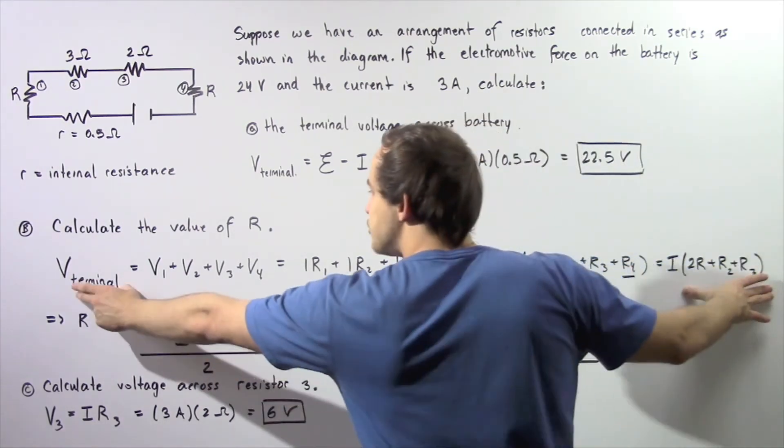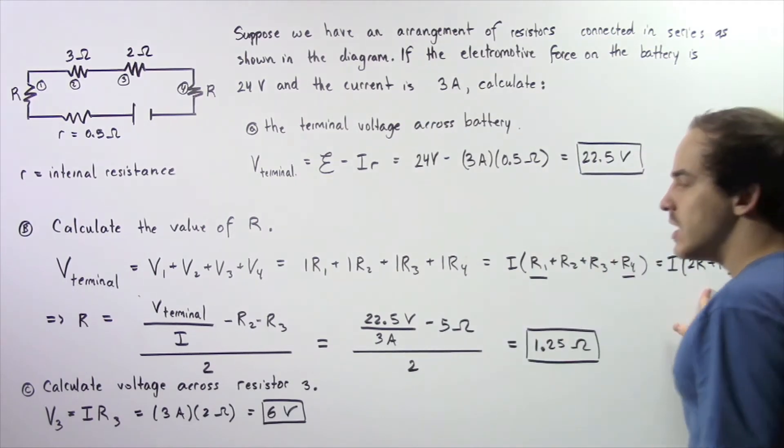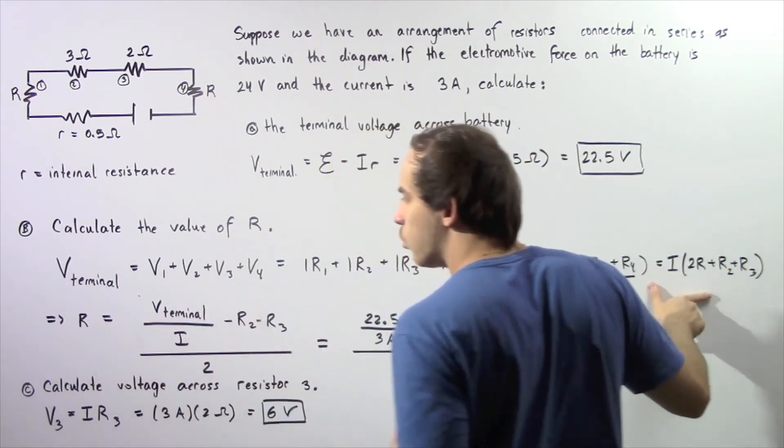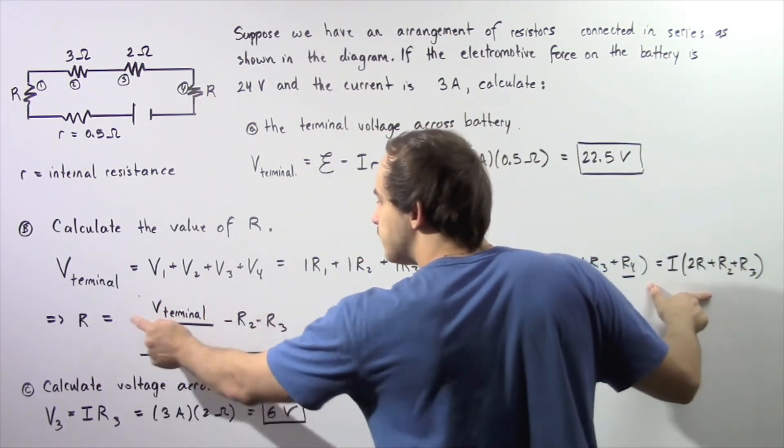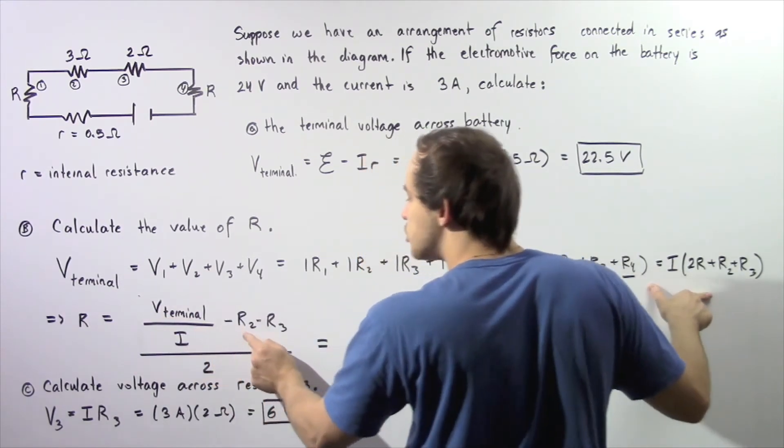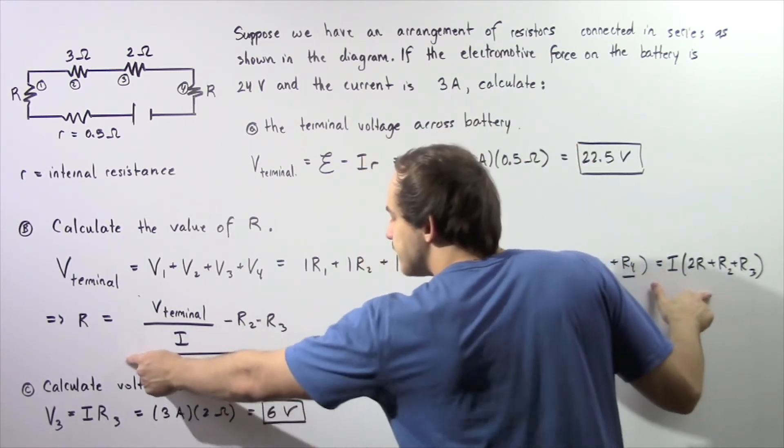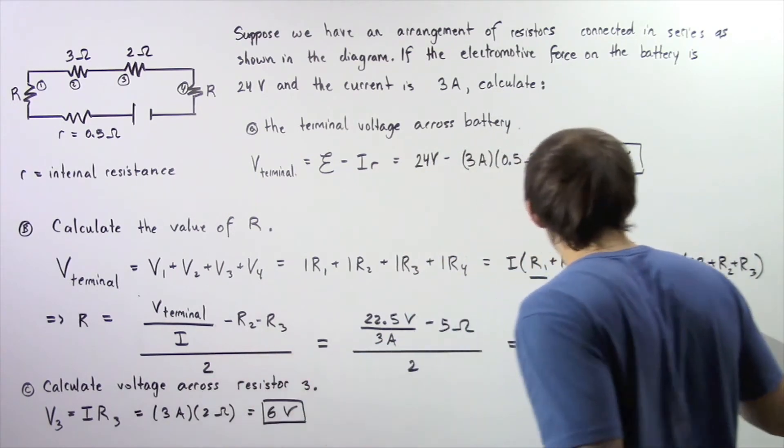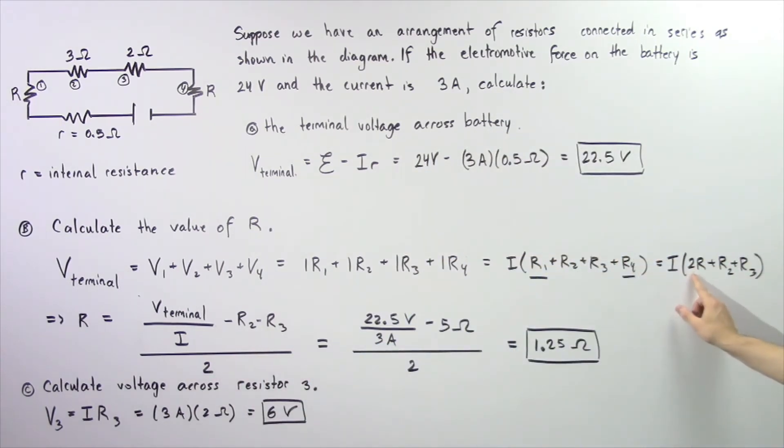So let's take this equation and solve for R. So we see that R is equal to V-terminal divided by I minus R2 minus R3 divided by 2.